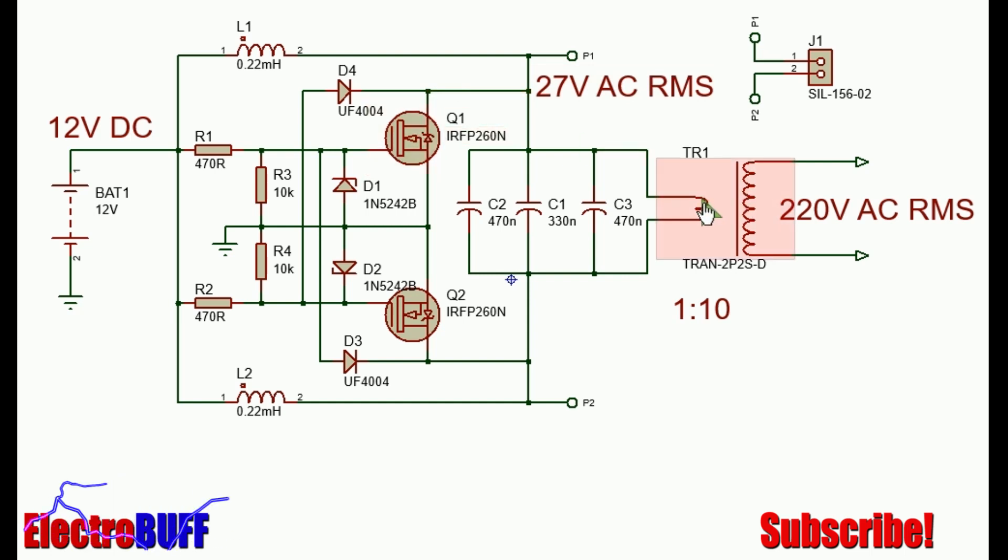Once the primary winding current saturates, the transistor Q1 will turn off and Q2 will turn on. The process will repeat; current will flow through L1, through the primary winding the other way, through Q2 and to ground.